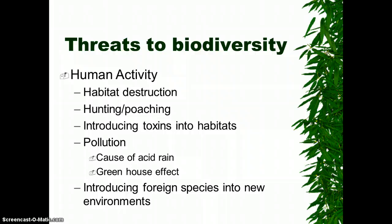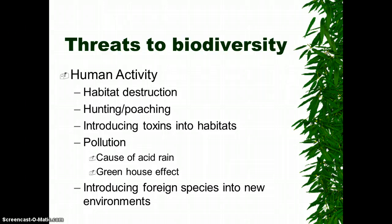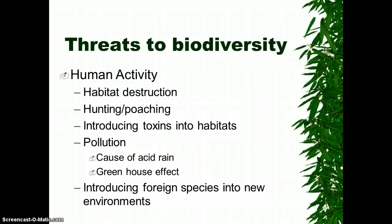Habitat destruction is the number one threat to biodiversity — just cutting down the homes where species live, especially the rainforest. Hunting and poaching — elephants are going extinct in certain parts of Africa because of poaching. Introducing toxins into habitats, like fertilizers or mercury leaking in. Pollution causes acid rain and the greenhouse effect. And last but not least, introducing foreign species into new environments.